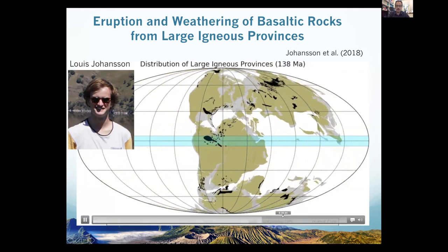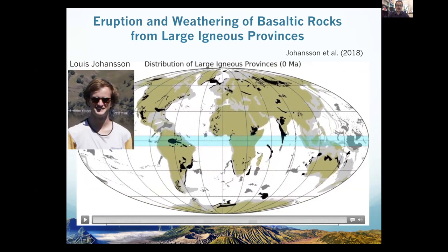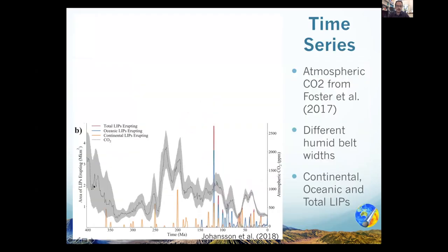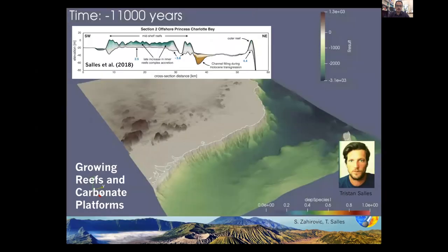Here is our atmospheric CO2 again in gray. In orange is the eruption of these large igneous provinces, and the colored lines represent the weathering in near-equatorial latitudes. You can see how we can actually interrogate these models and extract more meaning from them. And Tristan Sahl and others have been developing this surface process code that models erosion and deposition of sediments on continental scales, but also has a new carbonate module.